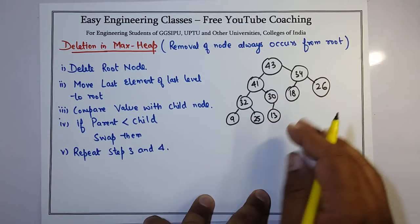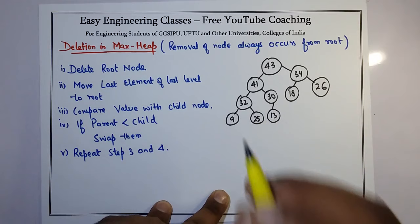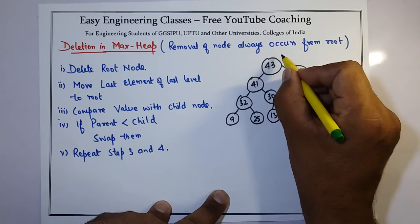Suppose I have to remove a node. As the algorithm says, we can delete from max heap only from the root. Now I have to delete a node as it says, it always occurs from root.